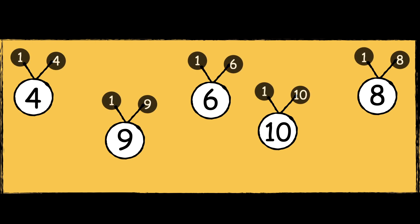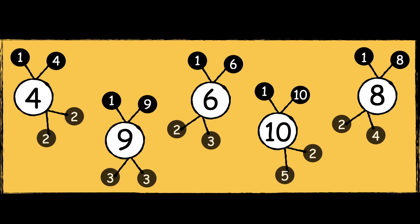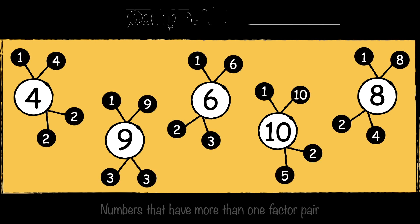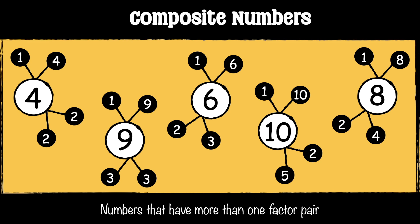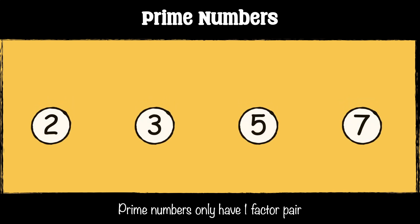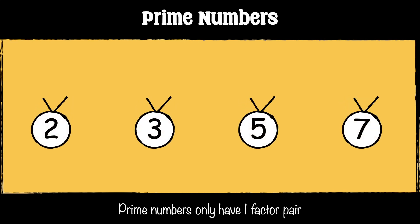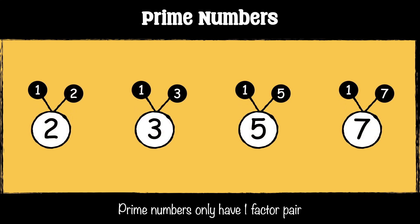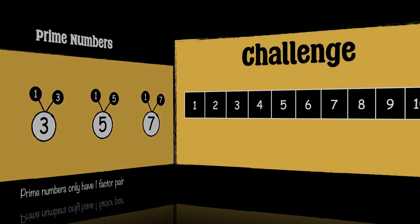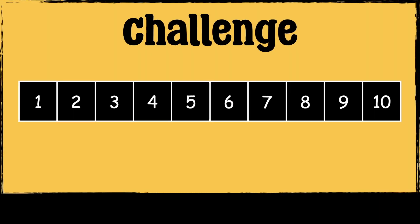Numbers that are not prime numbers have more than one factor pair. Numbers that have more than one factor pair are called composite numbers, whereas prime numbers only have one factor pair — 1 and itself.